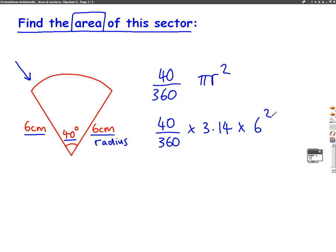Now, if you don't quite know how to do this on a calculator, this 40 out of 360 means divide. So on a calculator, we could type in 40 divided by 360 times 3.14 times 6 squared. And when we type this into a calculator, we get the answer of 12.6 centimeters squared.